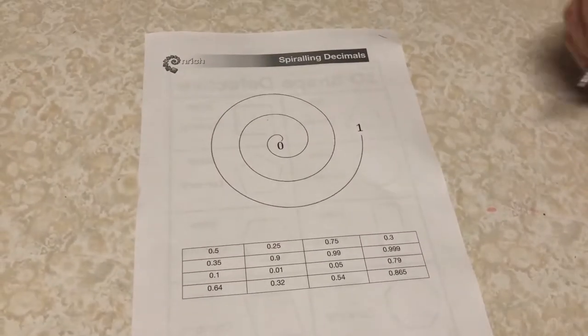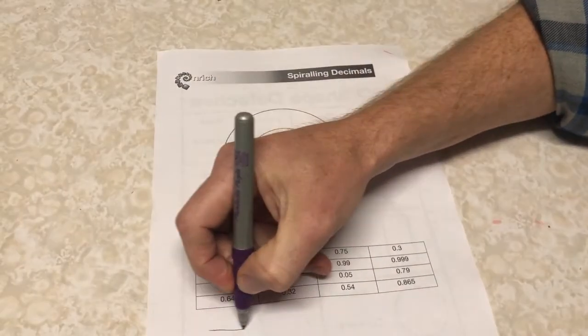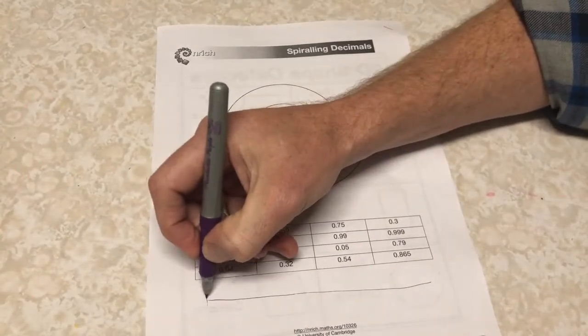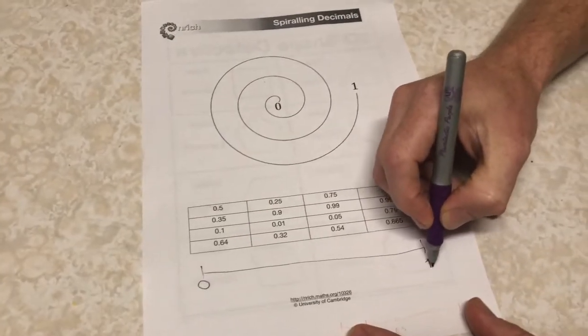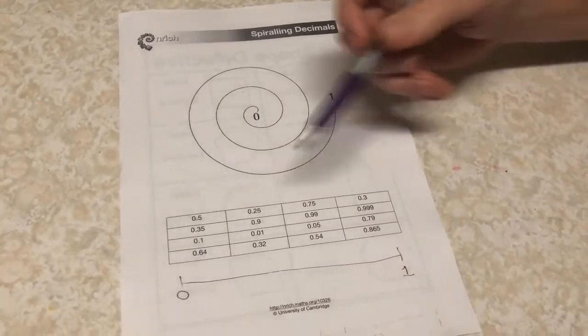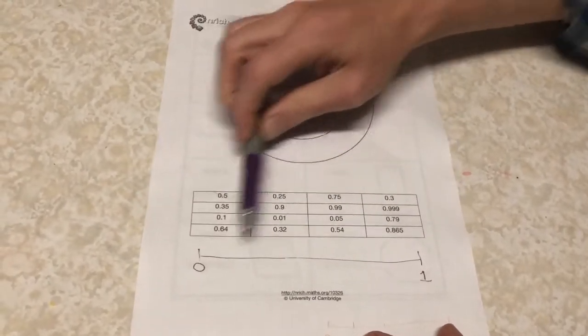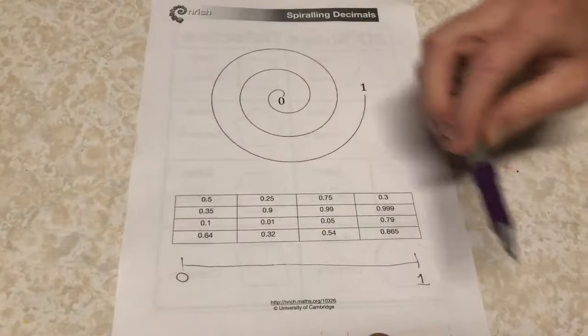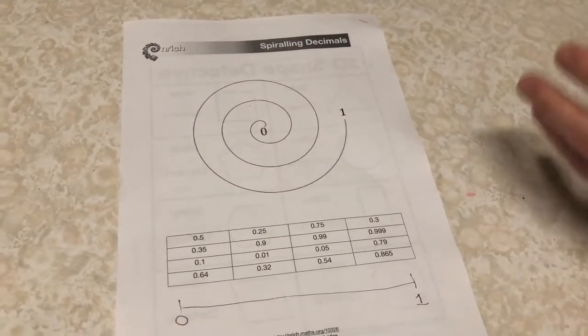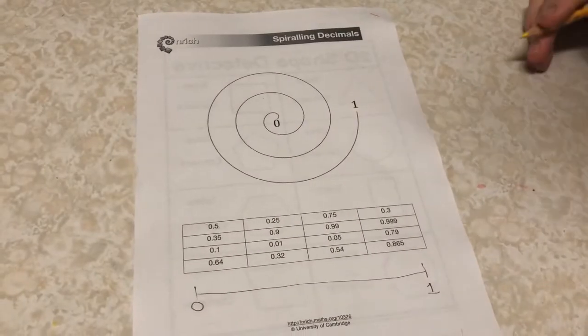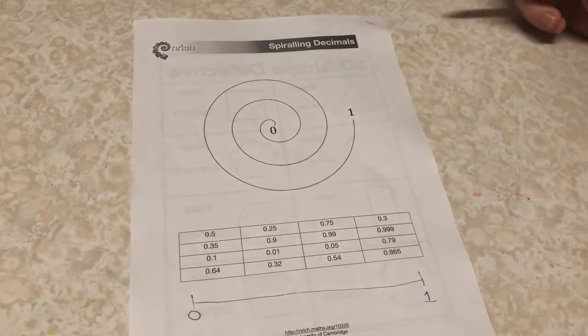So I reckon if that looks a bit challenging for you what you could do is just do a number line like this from zero to one and you can play the same game just on a normal linear number line and I reckon that's a really good way to help understand the game and maybe you might want to get into the spiral version a bit later.